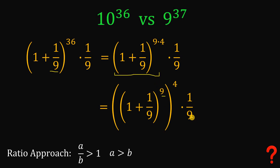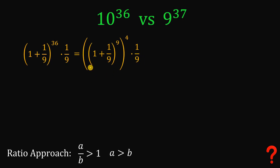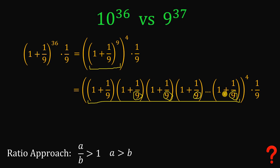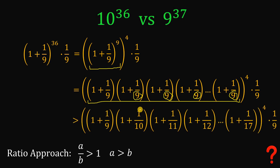Now let's focus on expanding 1 plus 1 over 9, raised to the power of 9. We need to multiply 1 plus 1 over 9 nine times like this. What we're going to do is replace the denominator 9 with 10, then 11, then 12, all the way down to 17. The resulting number is technically less than the original, so the original number is greater than this number for sure.